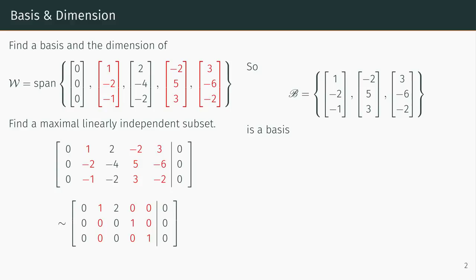Since there are 3 vectors in B, the dimension of W equals 3. This process always works to find a basis for the span of particular vectors.